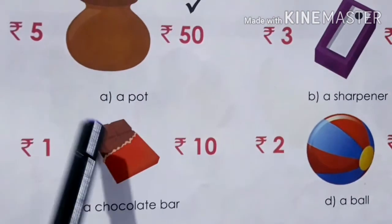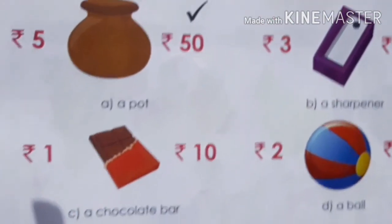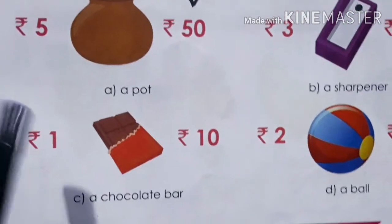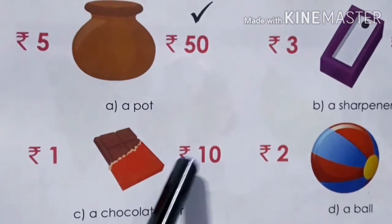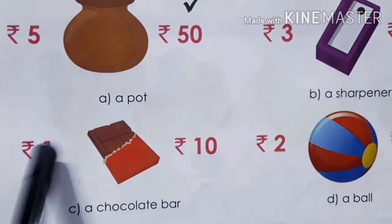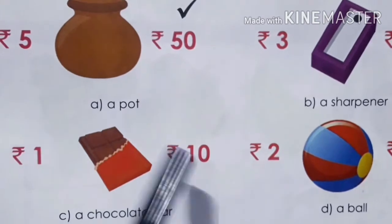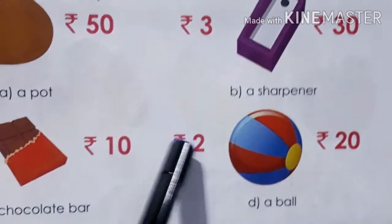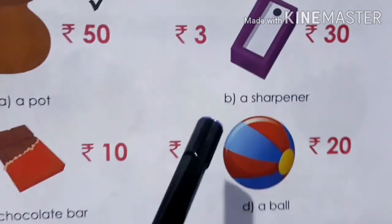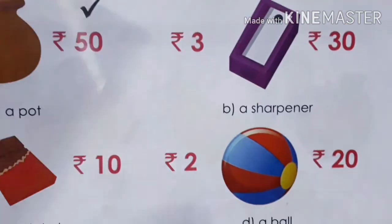Next is a chocolate bar. In 1 Rupee we get only a small candy, so what can be the price of this chocolate? Rupees 10. We have to guess between the two amounts given. Then comes a ball — what can be the price: Rupees 2 or Rupees 20? Rupees 2 is too less, so it will be Rupees 20. This is how we guess the price of items.